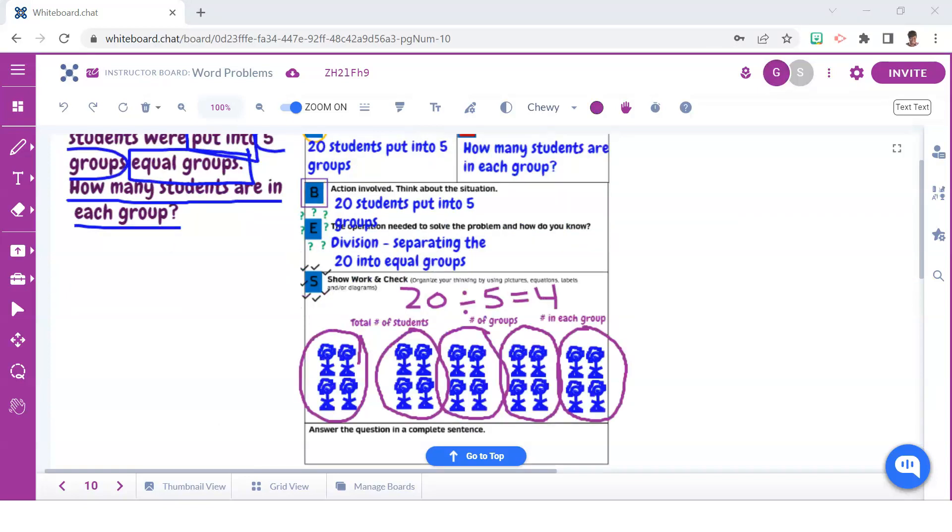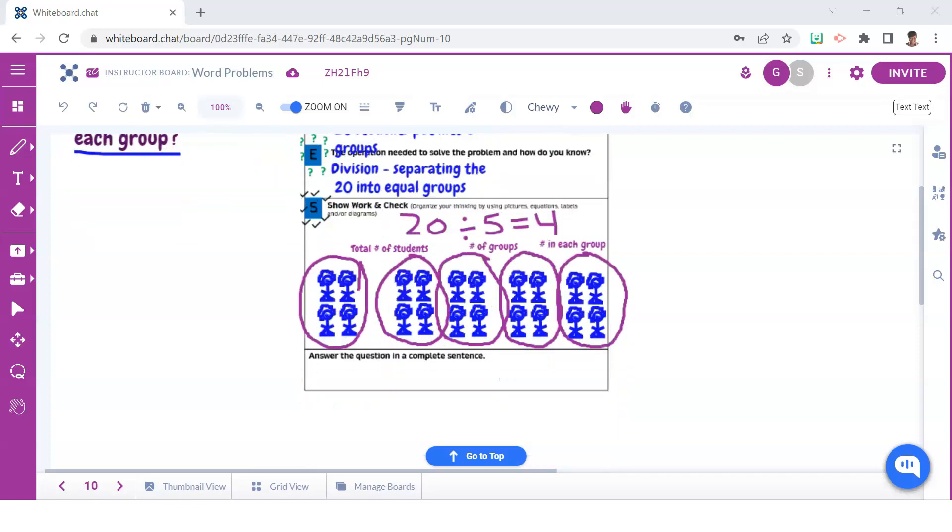In here we can see an example of how students can completely show their work, making sure to include an equation and/or picture, labeling each part so that it is clear to the reader that they understand the problem. And once the problem is solved, it's important that they then write their answer in a complete statement.